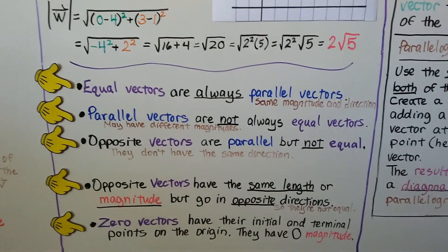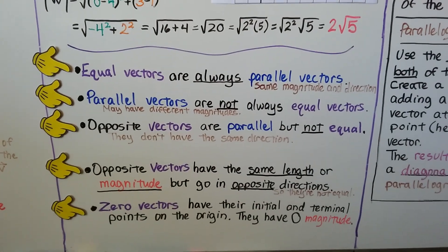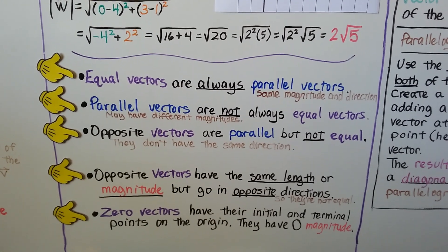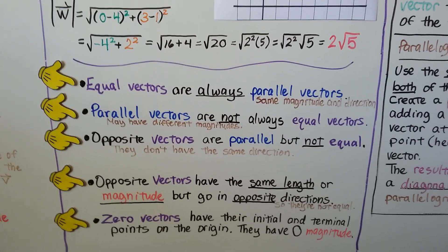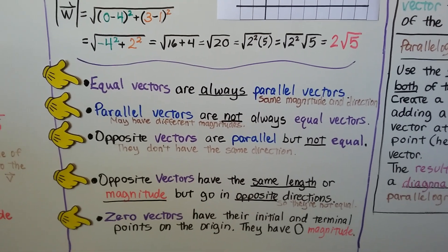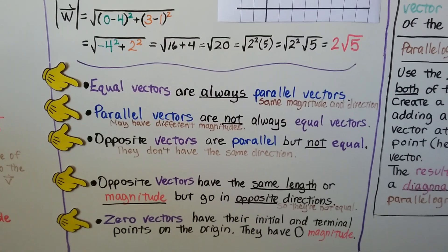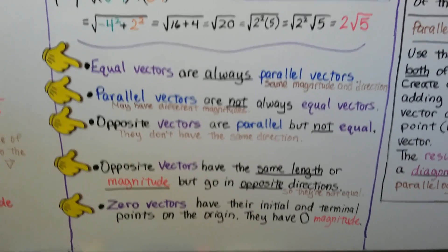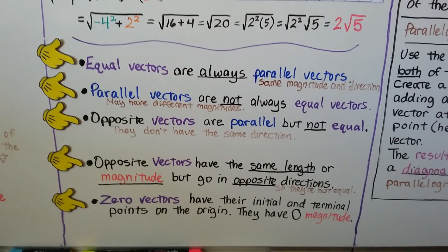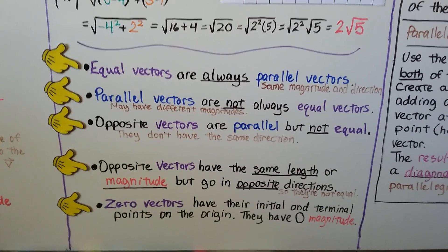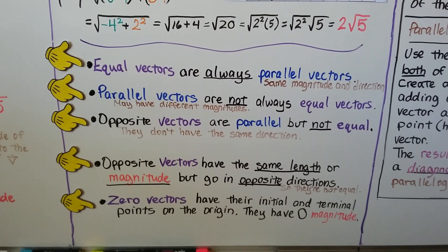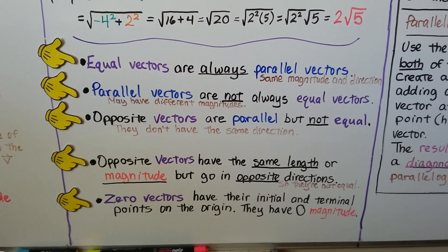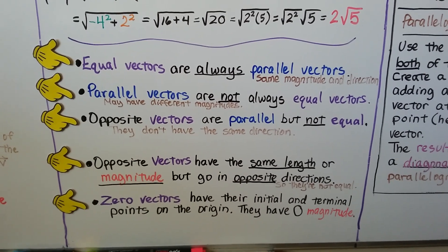This is really important: equal vectors are always parallel vectors — they have the same magnitude and direction. Parallel vectors are not always equal vectors; they may have different magnitudes. Opposite vectors are parallel but not equal because they don't have the same direction. Opposite vectors have the same length or magnitude but go in opposite directions. Zero vectors have their initial and terminal points at the origin and have zero magnitude.